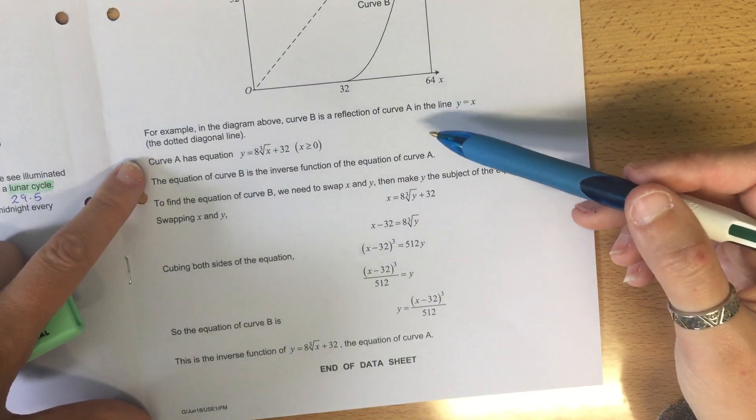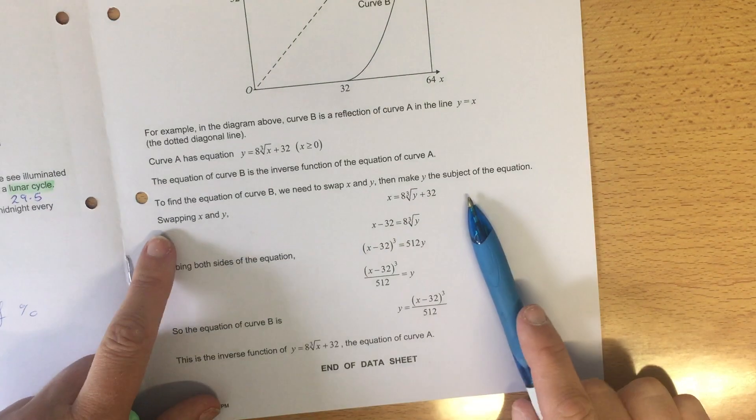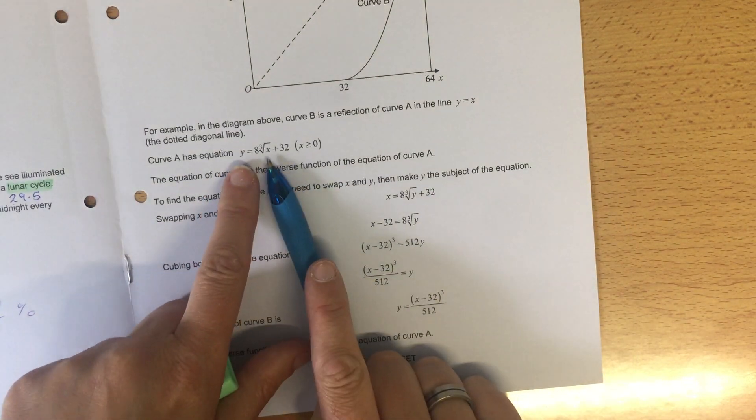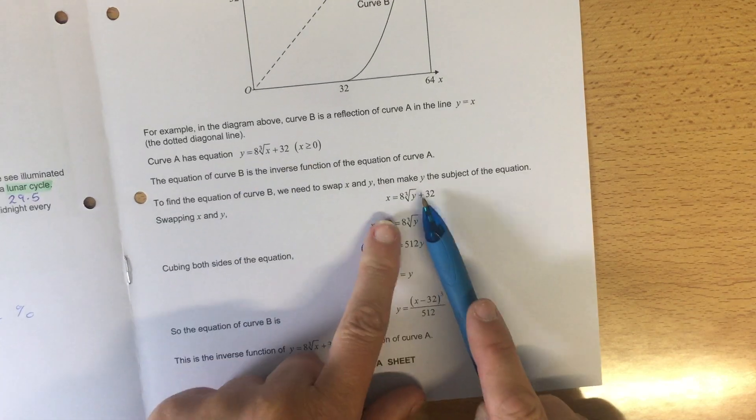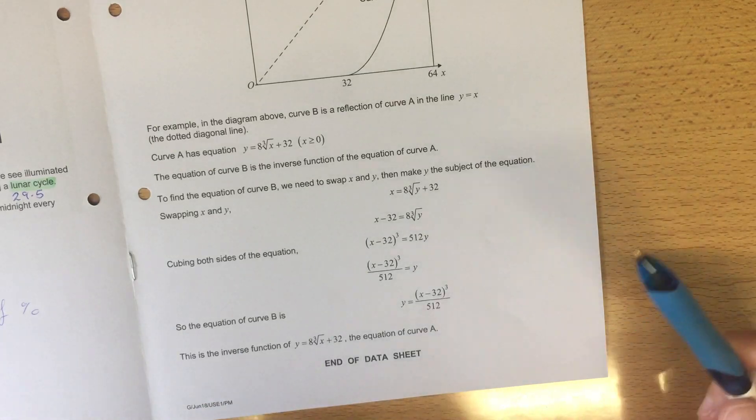When you're working out an inverse, the first thing that you do is you swap the x and the y over, and then you rearrange it to find y.